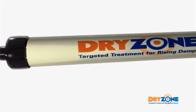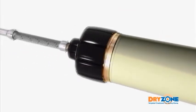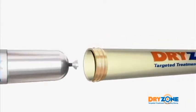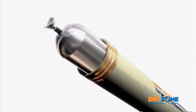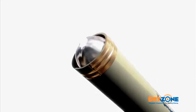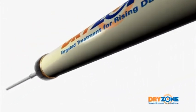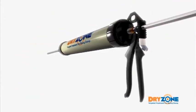Dryzone damp-proofing cream is shipped in easy-to-handle foil cartridges, and once placed within the applicator gun, a sharp blade should be used to remove the end of the packaging, and the applicator cap securely reattached, ready for use.